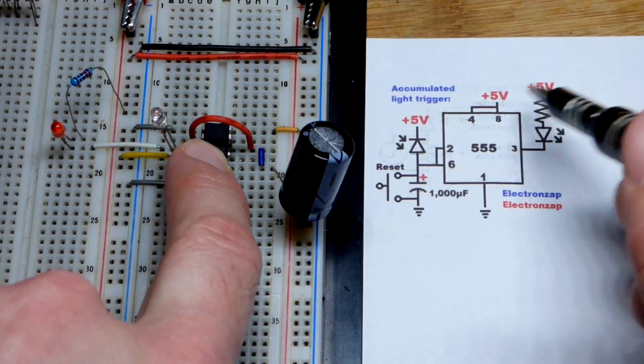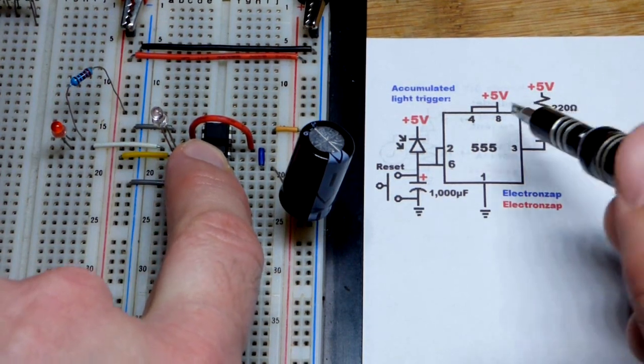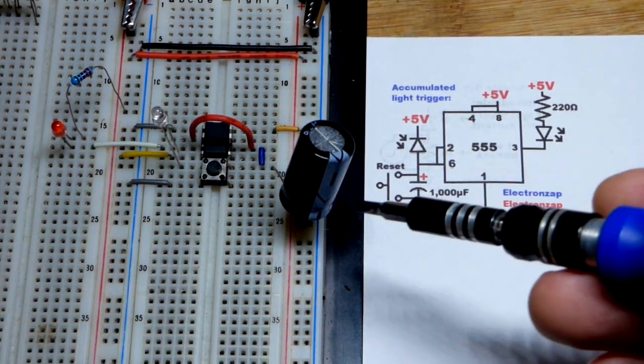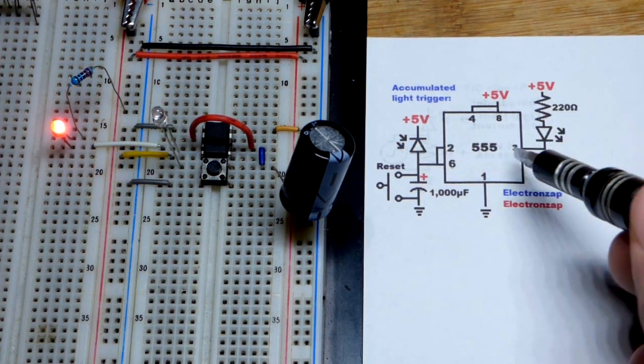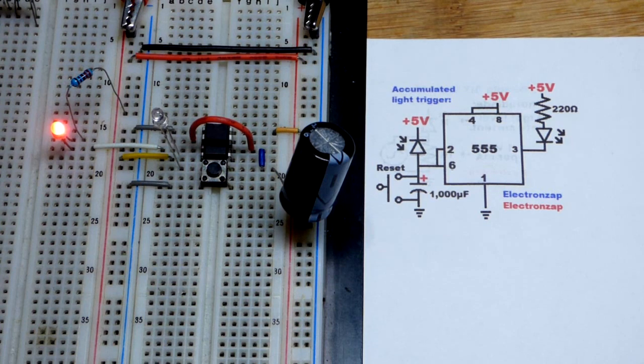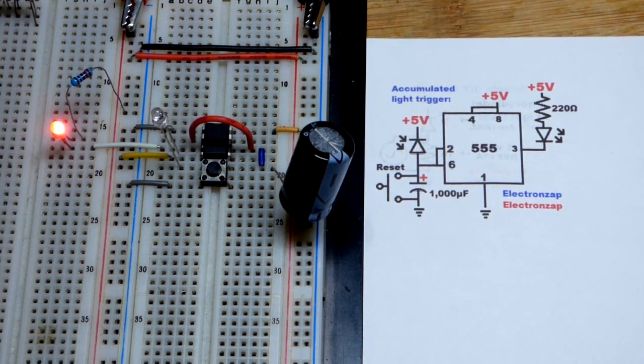If I reset the 555 timer, now the output is five volts. The LED is off until the capacitor charges up through the photodiode to two-thirds supply voltage. Now it went to ground. So any case, I went over all these topics, but now I'm combining them in a different way.